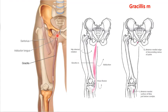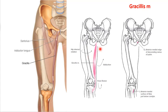The gracilis shares an attachment point with the sartorius at the pes anserine. It is a hip flexor and knee flexor. It doesn't have a strong line of pull for rotation, but if anything, it might do internal rotation. So the sartorius is an external rotator and the gracilis is an internal rotator — that's where these two differ. But they do the exact same action in terms of sagittal plane motion: both are hip flexors and knee flexors.